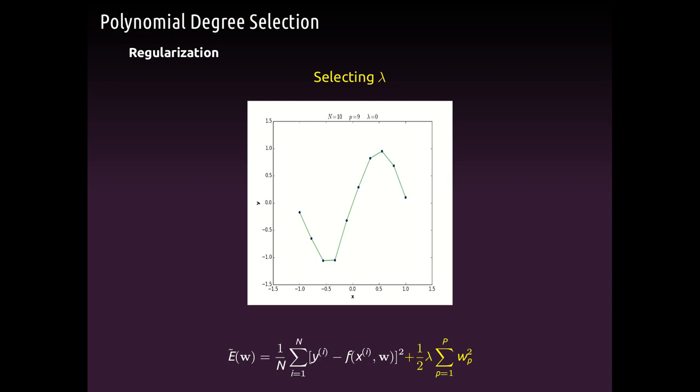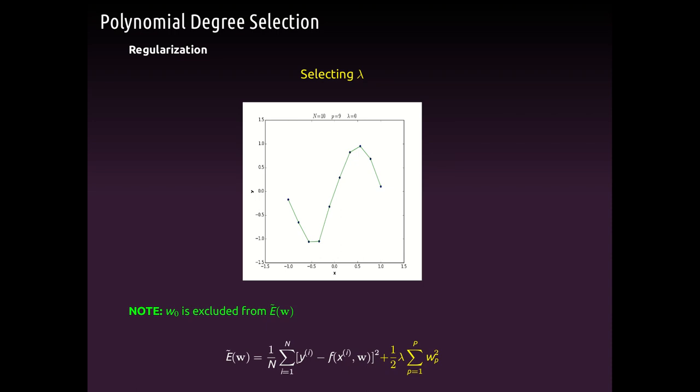At lambda near zero the model has very poor performance on unseen data. This is how the regularization procedure works: start with a high lambda value and decrease step by step until we reach a level of complexity that is not overfitting but can still capture the many trends and directions in our dataset.